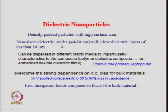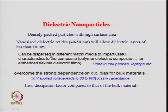If you can reduce dielectric oxide nanoparticles to the size of 40–50 nanometers, you can make dielectric layers of less than 10 microns, which is very advantageous in making the final chip very small. Another important property is that these nanoparticles can be dispersed in different matrix media — you can use a polymer, a metal, or a ceramic composite as the matrix.